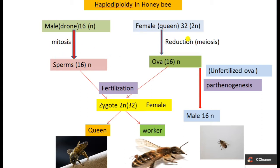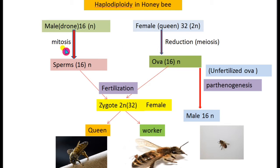Males produce sperms by mitosis and females produce ova by reduction division or meiosis. The chromosomal number of the sperm does not change because the division is mitosis. But the chromosomal number of the ova is reduced to half because the division is meiosis. In mitosis the chromosomal number doesn't change, but in meiosis it is reduced to half — so 32 (2n) is changed to 16 (n), the haploid number.